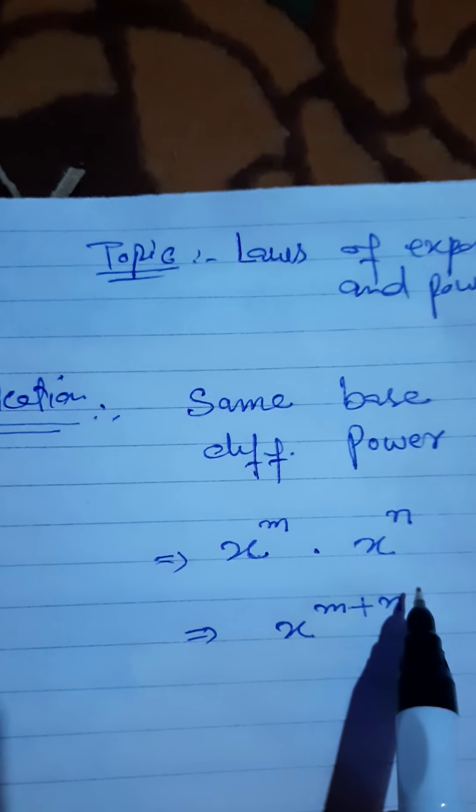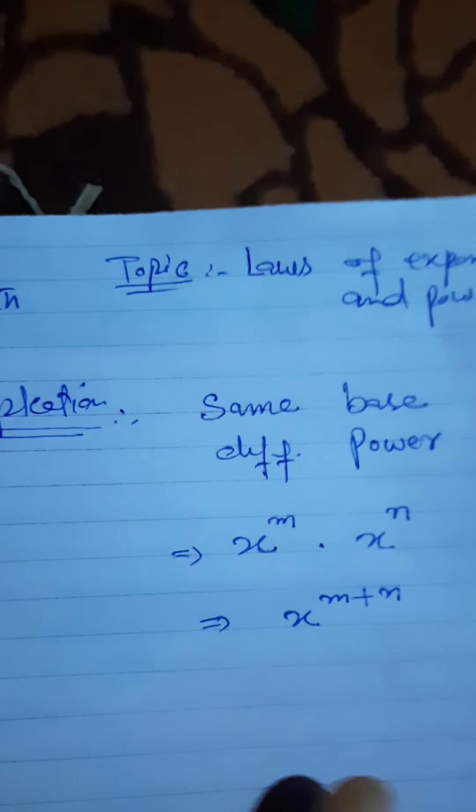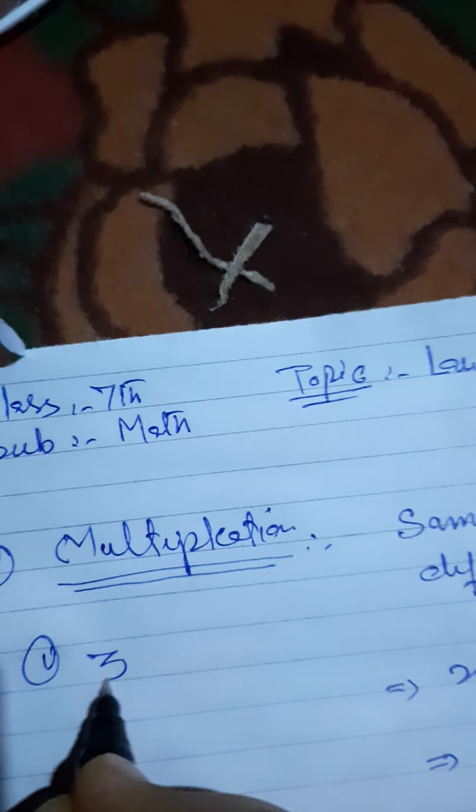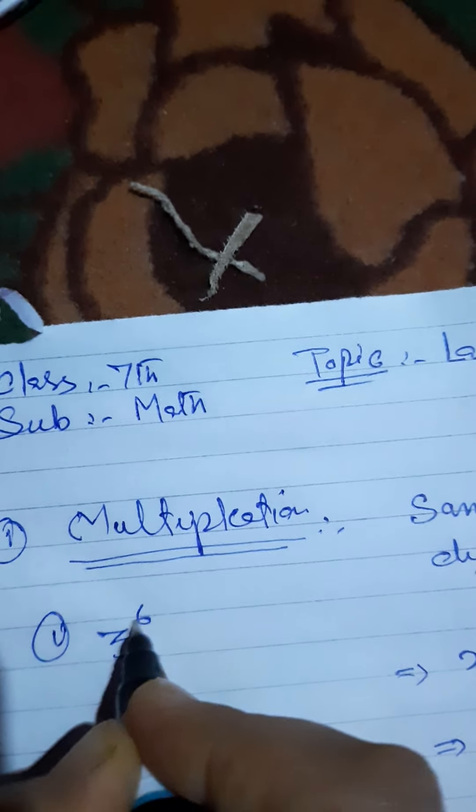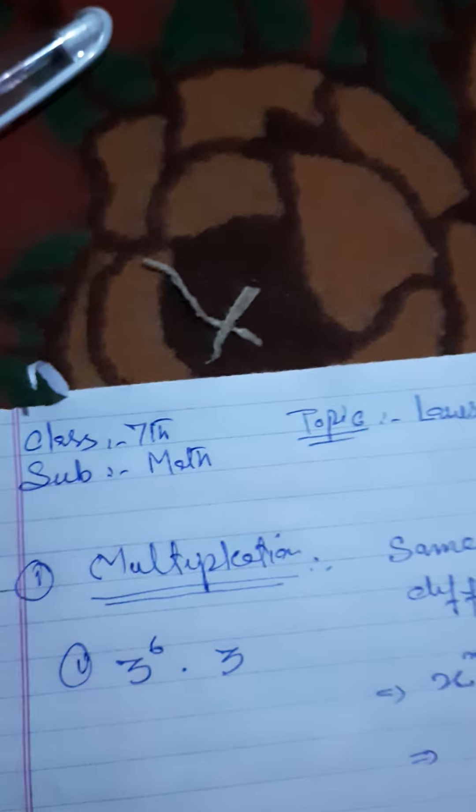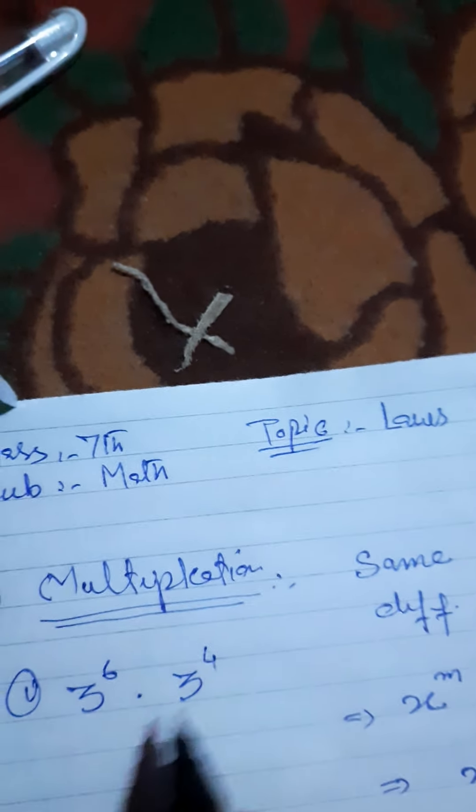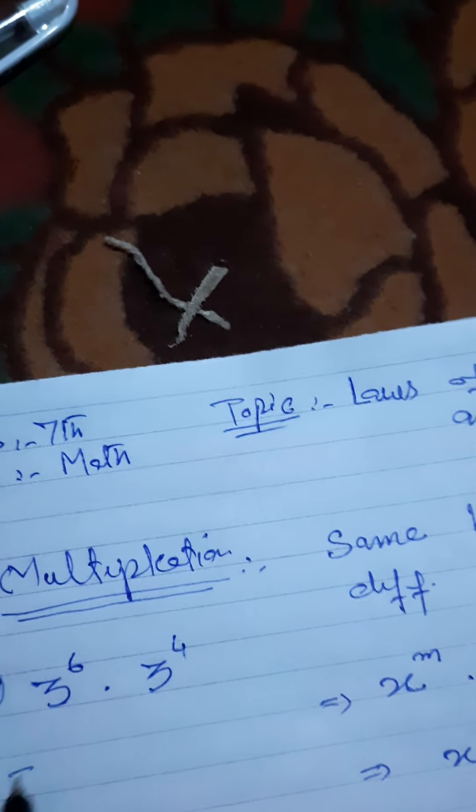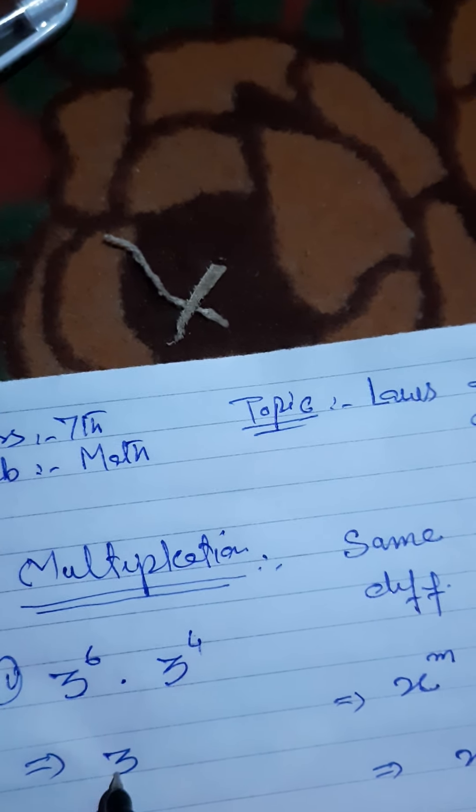For example, 3 raised to power 6 times 3 raised to power 4, the bases are the same but powers are different.